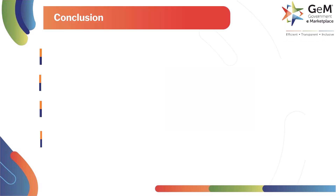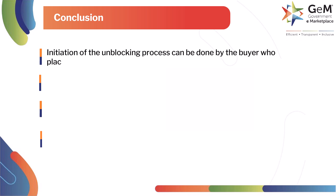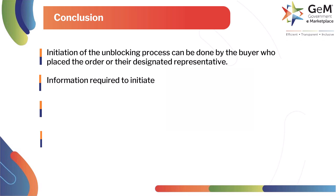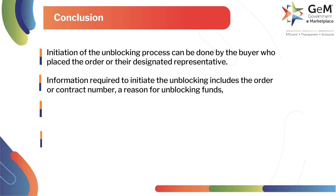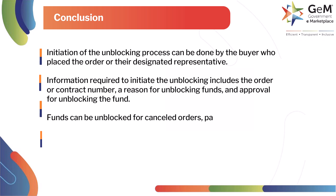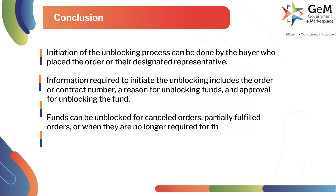Here are the key takeaways for the module. Initiation of the unblocking process can be done by the buyer who placed the order or their designated representative. Information required to initiate the unblocking includes the order or contract number, a reason for unblocking funds, and approval for unblocking the fund. Funds can be unblocked for cancelled orders, partially fulfilled orders, or when they are no longer required for the specific transaction.